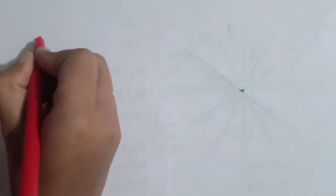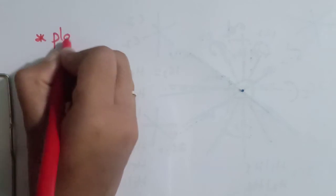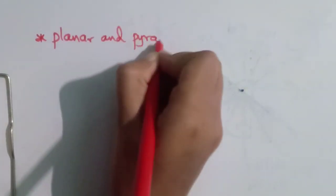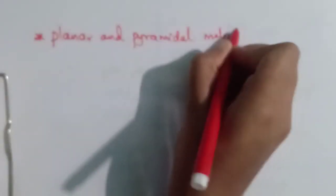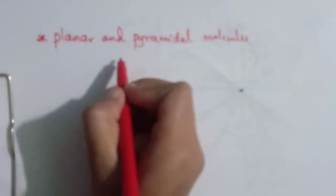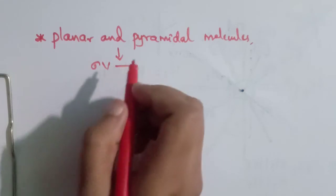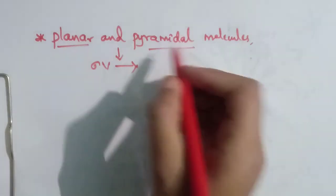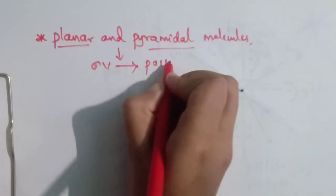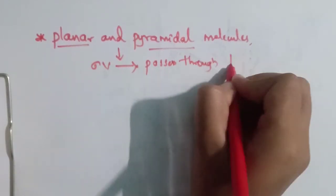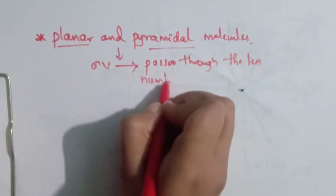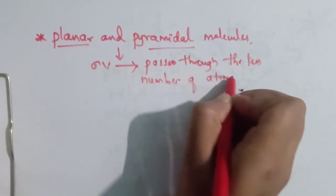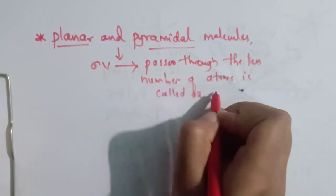In planar and pyramidal molecules, the definition of sigma_d is: the sigma_v that passes through the fewer (less) number of atoms is called sigma_d.